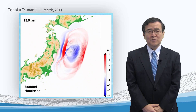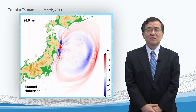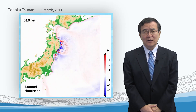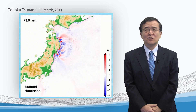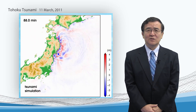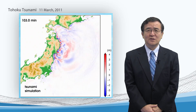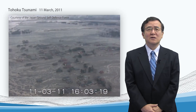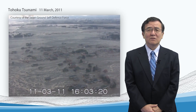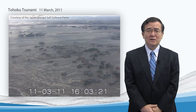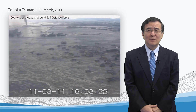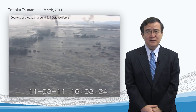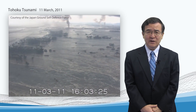On March 11, 2011, a big tsunami attacked the coastal areas of the north-eastern part of Japan. The tsunami flooded over land and devastated the local communities in the areas.